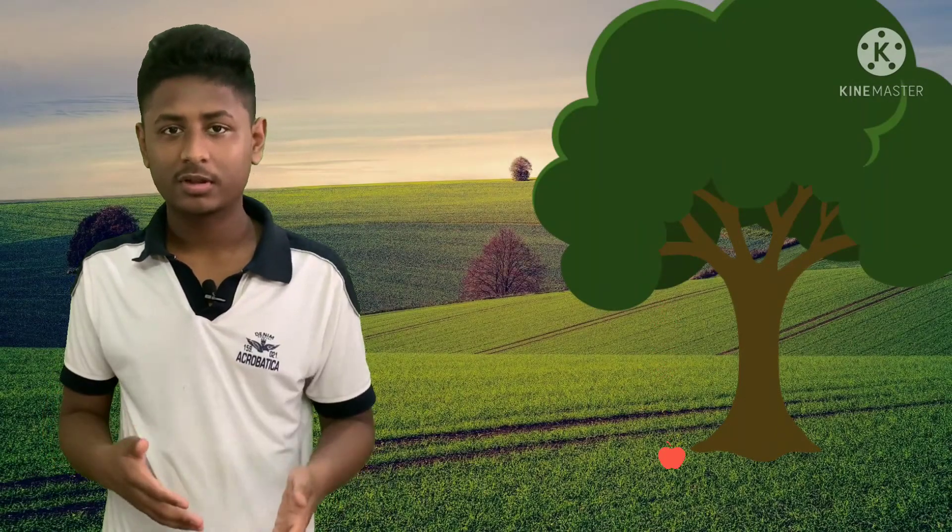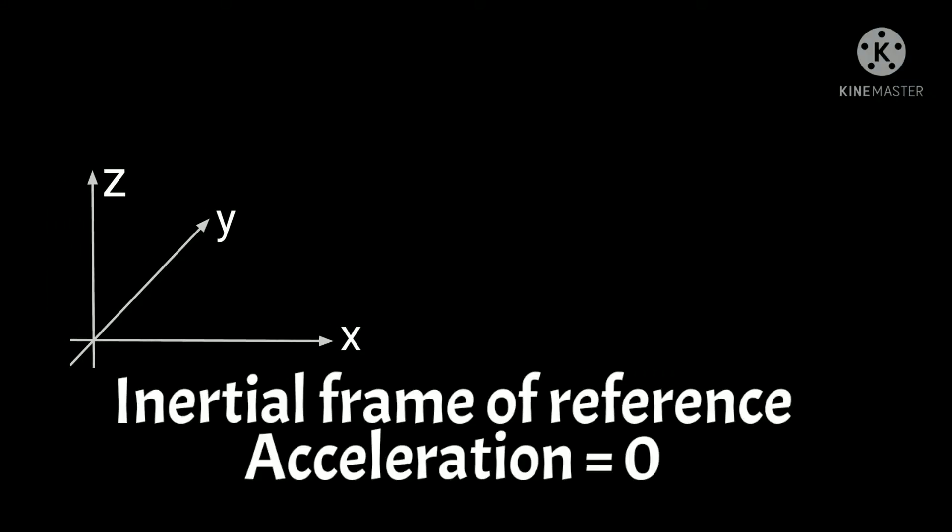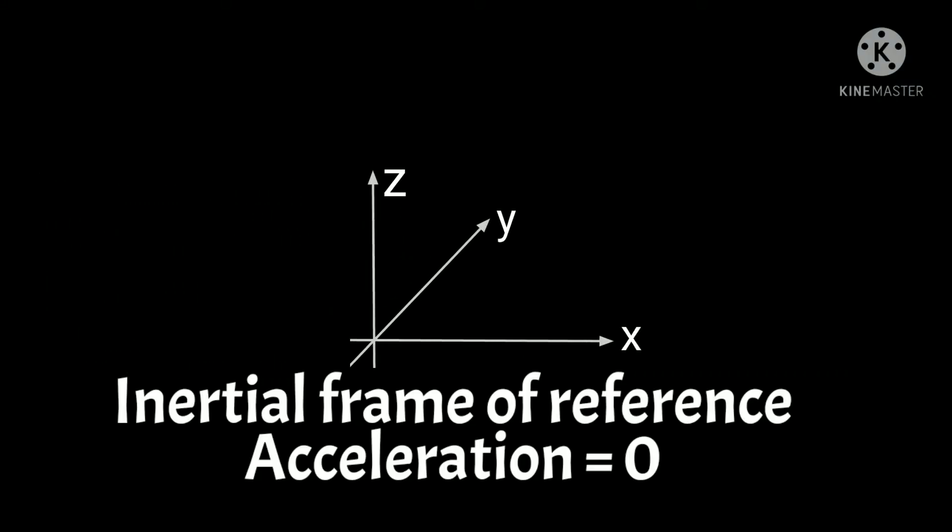If an apple falls from a tree, relative to the Earth, the apple accelerates and falls to the ground. But relative to the apple, the floor accelerates upwards and hits it. So which reference frame is true? Well, the inertial reference frame. In both classical physics and special relativity, the reference frame undergoing no acceleration is the one which decides what happened. This is the inertial reference frame, and these theories are only valid when applied from an inertial reference frame. All constant velocity reference frames from an inertial reference frame are also inertial.